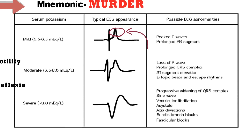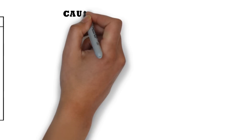When the level is more than 8 mEq per litre — severe hyperkalemia — there occurs progressive widening of QRS complex, sine wave pattern, ventricular fibrillation, asystole, axis deviation, and bundle branch blocks or fascicular blocks.